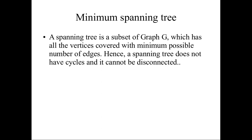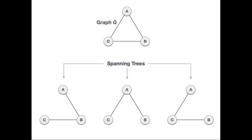An edge is just a connection between any two vertices. This spanning tree should not have any cycles like a loop, and also it should not have any disconnected nodes. Here I have given one example which is called graph G — it is having three vertices A, B, and C, which are connected internally.